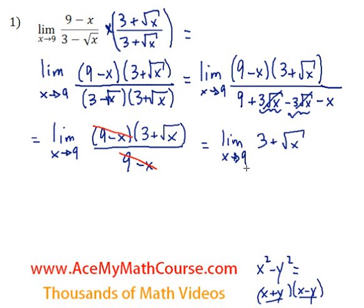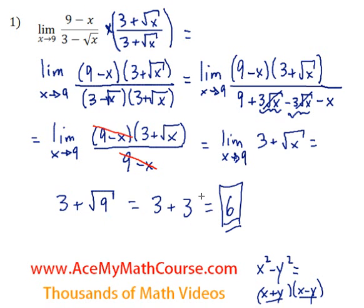At this point, we can actually plug the 9 in for x. And why is that? Because we no longer have a 0 down at the bottom of a fraction, which made that impossible initially. So 3 plus 3, because the square root of 9 is 3, which is 6. And this is the limit. That's it.